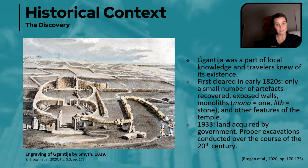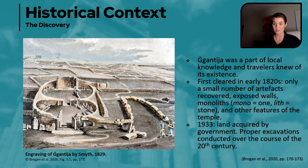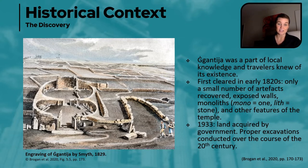This brings us back to the idea of the palimpsest that we talked about last week. This phase from the early 1820s — this layer — is gone, and hence so is a portion of our understanding of the site, which is fairly limited to begin with. It wasn't until 1933 that the government attained the land and, in tandem with the Museum Department of Malta, conducted plenty of excavations over the course of the 20th century, and excavations do continue to this day.